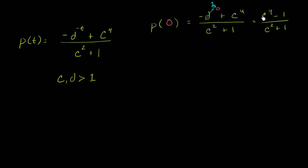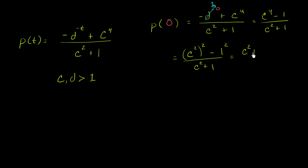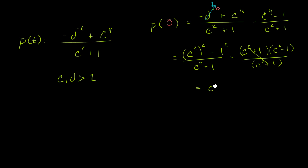Now this might jump out at you as a difference of squares. We can write c to the fourth minus 1 as c squared squared minus 1 squared, all over c squared plus 1. That factors as c squared plus 1 times c squared minus 1, all over c squared plus 1. We have c squared plus 1 in both numerator and denominator, so they cancel, and our initial position simplifies to c squared minus 1.